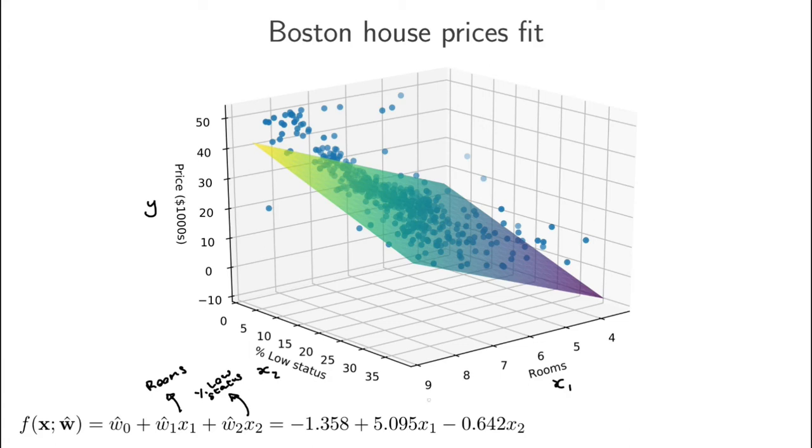How does the median house price change according to my model when I go from 10% to 20% low status households? Just looking at the equation, what happens if my rooms are fixed and I change the percentage of low status households? So this number x1 is fixed at some value and I change x2 from 10% to 20%. How does that affect the prediction of the price?